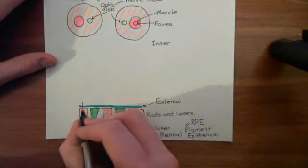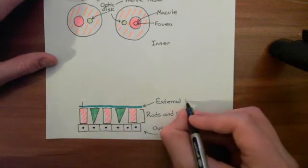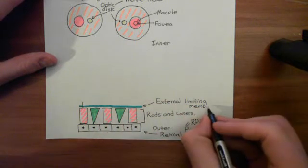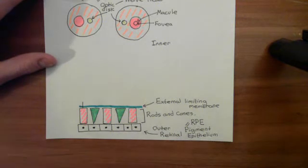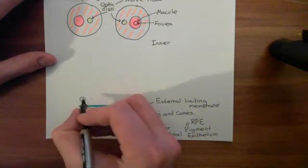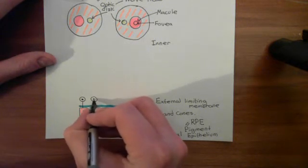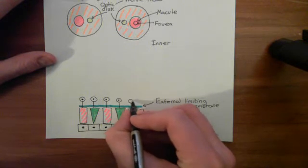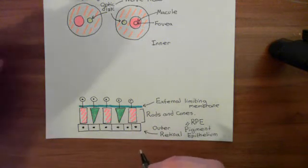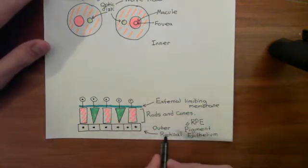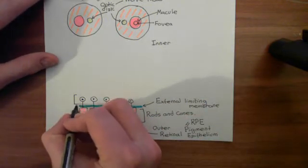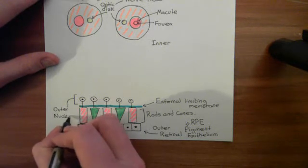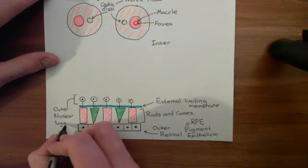The cell bodies of the rods and cones are located inward of the external limiting membrane. So we have the cell body of each rod and cone here. This layer of cell bodies is known as the outer nuclear layer — it is the outermost nuclear layer in the retina and contains the cell bodies of the photoreceptors.